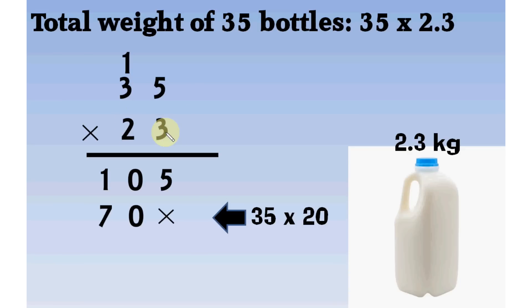So, we first multiplied 35 by 3, then we multiplied 35 by 20. Now, we would add the products to get answer of 35 multiplied by 23. 5. 0 plus 0 is equal to 0. 1 plus 7 is equal to 8.